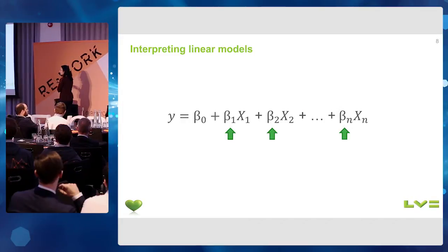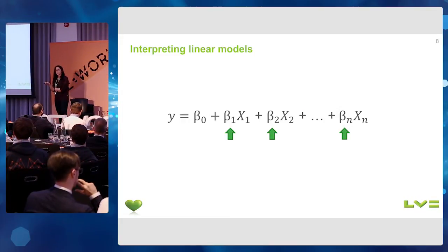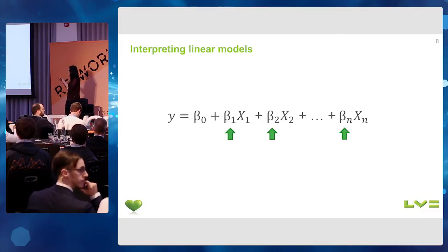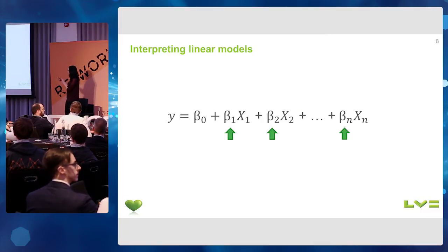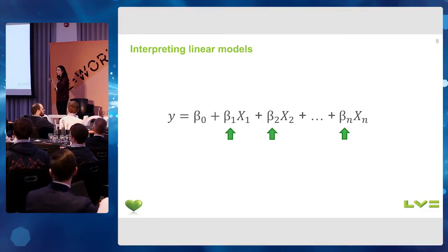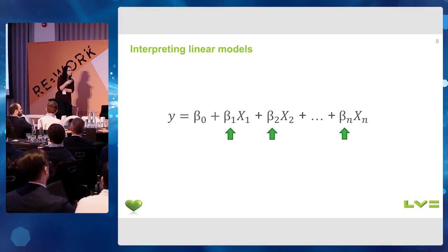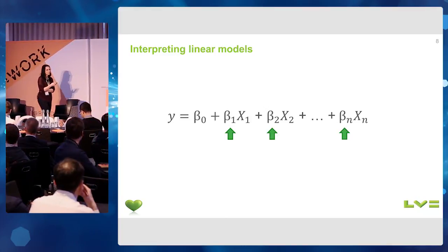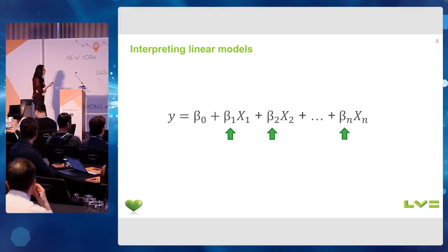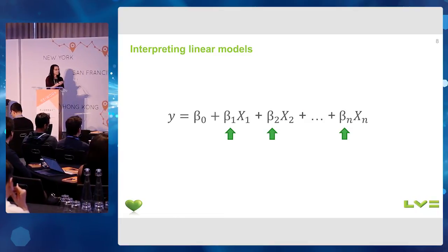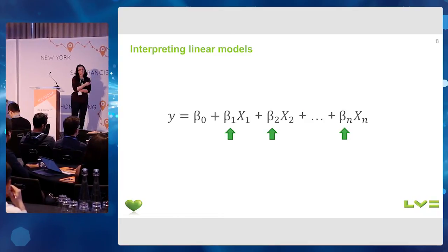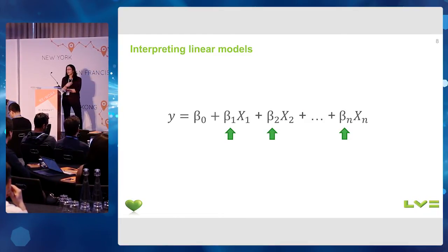I'm going to talk a little bit about how to interpret different models. For example, this linear model: the x's, x1 to xn, are the input variables that we fit into the model, and the betas are the coefficients that the algorithm has selected to weight those variables to make the prediction y. It is quite clear to see that the bigger the beta, the highest the contribution of that variable to make that prediction.